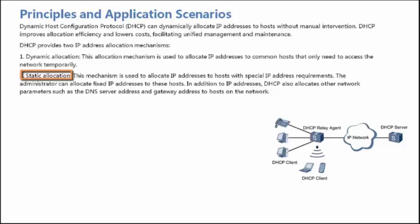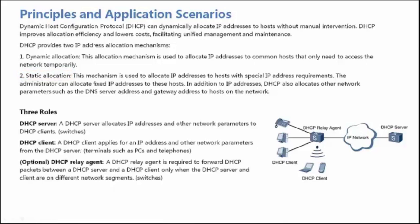DHCP can also allocate other network parameters, such as the DNS Server Address and Gateway Address to hosts on the network. DHCP Networking involves three roles. DHCP Server: a DHCP Server uses DHCP to allocate IP Addresses and other network parameters to clients.